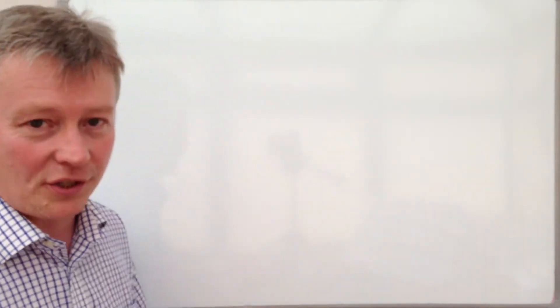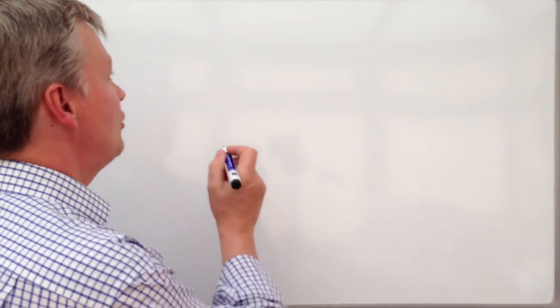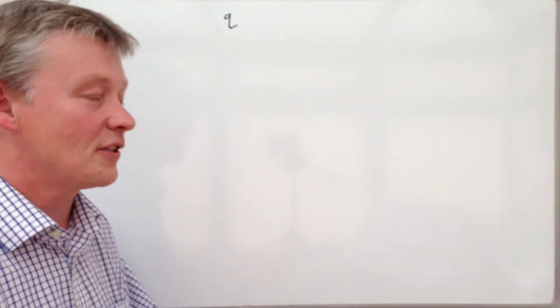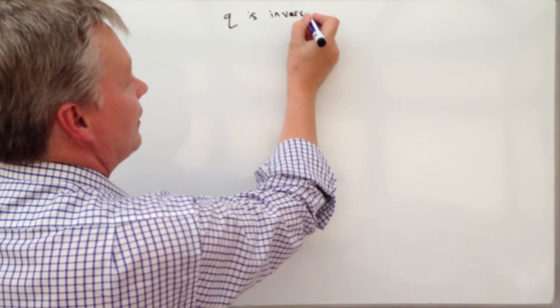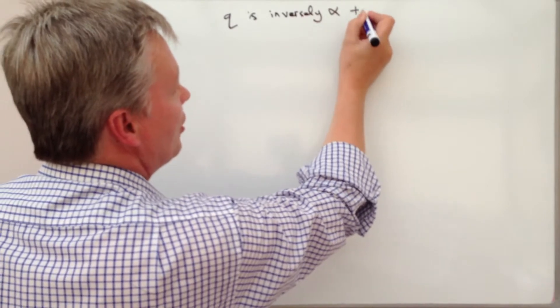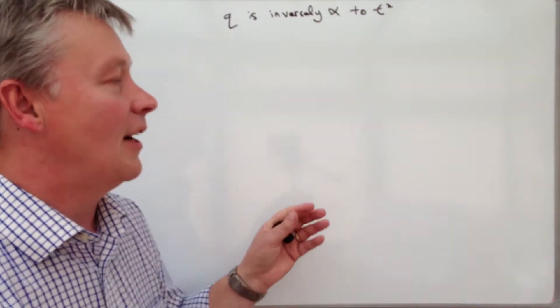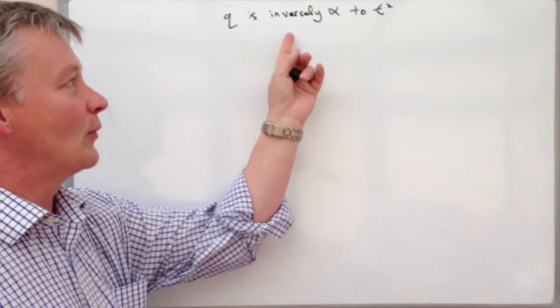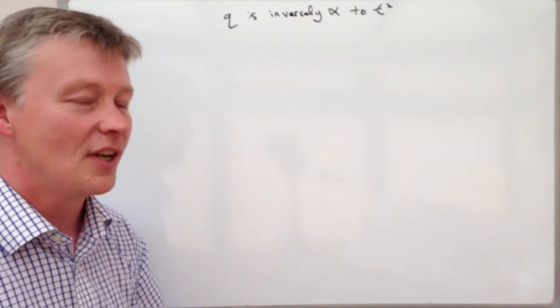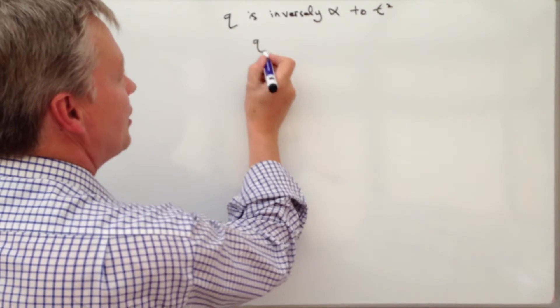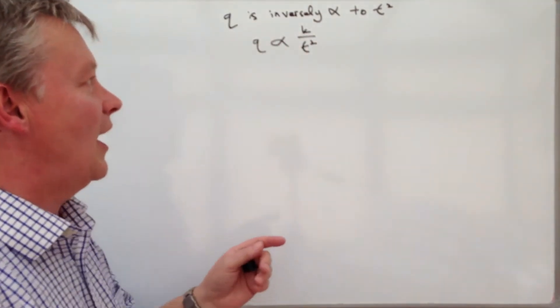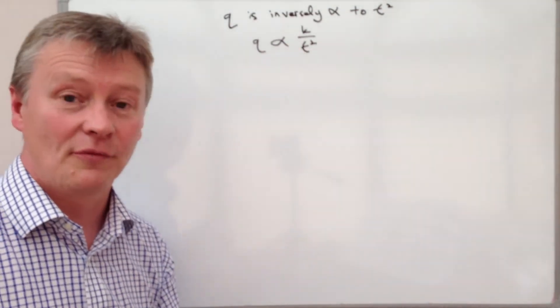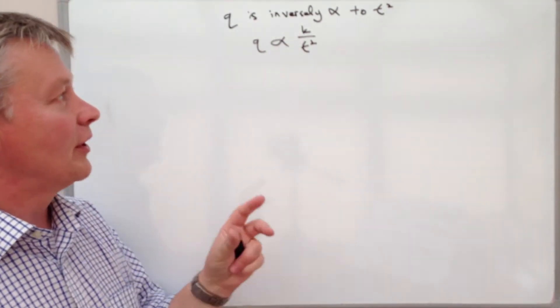So this particular question deals with two values Q and T, and what it tells us is that Q is inversely proportional to T squared. The clue really in the question is inversely proportional, so in other words the relationship is Q is proportional to K over T squared.